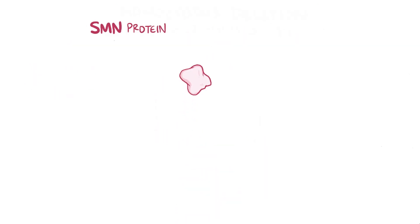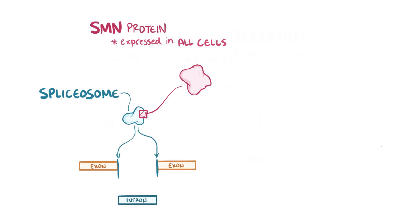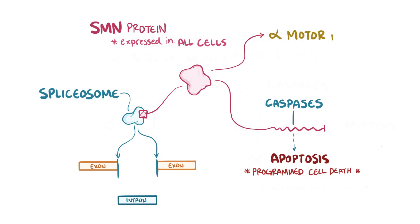The SMN protein from the SMN1 gene is expressed in all cells. For one, the SMN protein is a component of the spliceosome, a molecular machine that cuts the introns out of pre-messenger RNAs. SMN also blocks caspases, which are proteins involved in apoptosis, or programmed cell death, so lacking SMN might also enhance apoptosis. SMN protein is particularly important for alpha motor neurons, but the exact mechanism relating the protein to the function of those cells is still unclear.